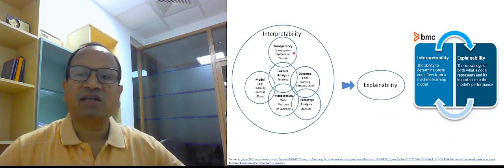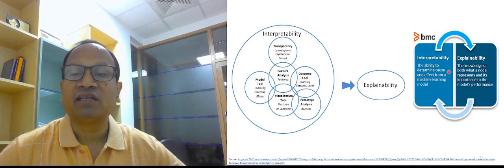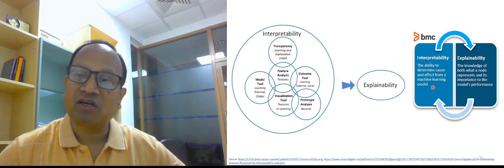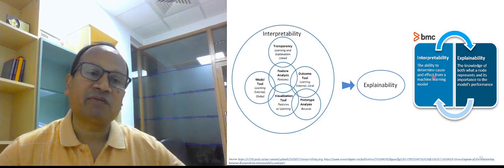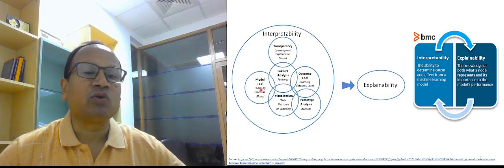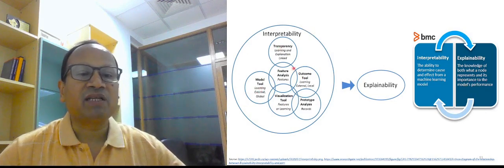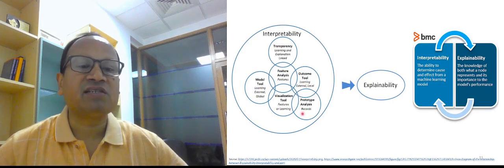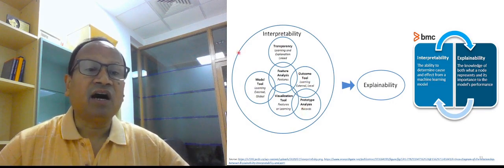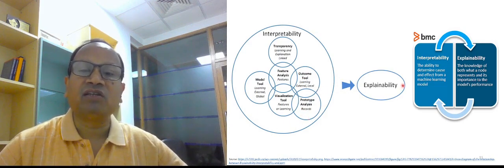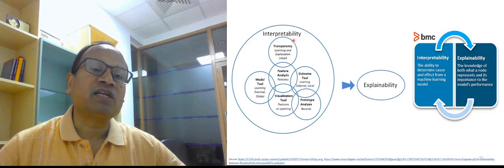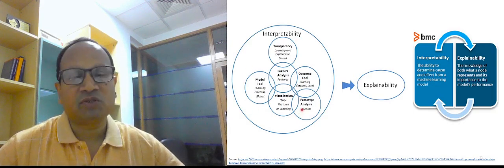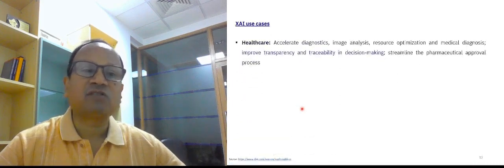Finally, there is a term called interpretability. This is the ability to determine cause and effect from ML model. Whereas explainability is a knowledge of both what a node represents and its importance to the model's performance. As far as interpretability is concerned, it includes model tool, transparency, outcome tool, feature analysis, visualization, and prototype analysis. All these are there that makes the model explainable. But in addition to this, the knowledge of both what a node represents, what is the significance of each node, that contributes either transparency, outcome prototype, and visualization and interpretability. That is explainability.